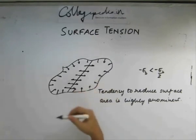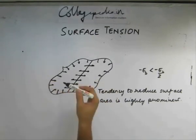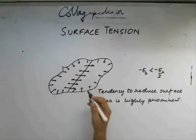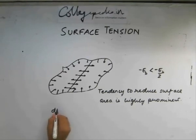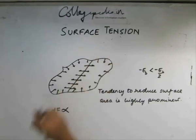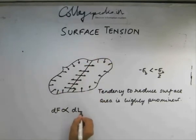So these liquid molecules on the surface experience a force which makes them reduce the surface area of the interface we are talking about. And this force, say df, is proportional to this length. Let's say this is dl.